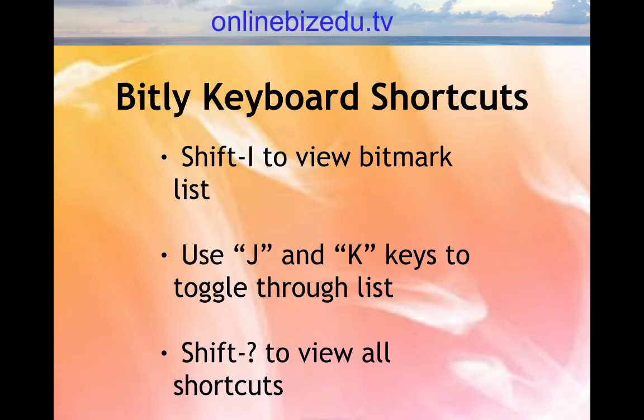Bitly offers several keyboard shortcuts to make working with short links quick and easy. To view your bitmark list, hit Shift-I. To change your privacy settings, press P while you have a bitmark selected. Use the J and K keys to toggle through your bitmarks. Hit the N key to create a note and press T to edit the title of your short link. For a complete list of keyboard shortcuts, press Shift-Question mark while you are logged in.